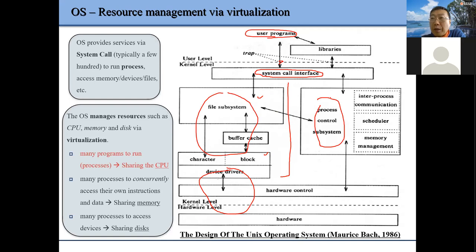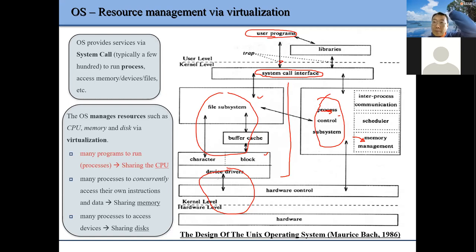If you want to run a program, you have to create a process. Managing those processes inside the kernel is our process control, which involves several issues — for example, how to manage memory, because when we run a process we need to load our data and program into memory. If we have multiple processes running at the same time, we have the issue of how to manage memory.